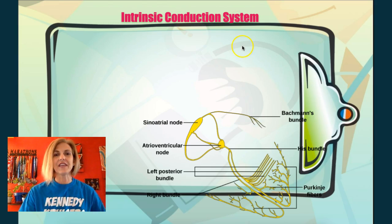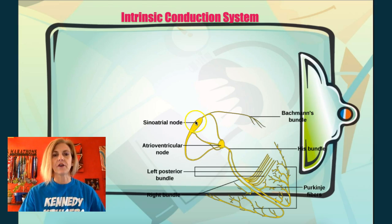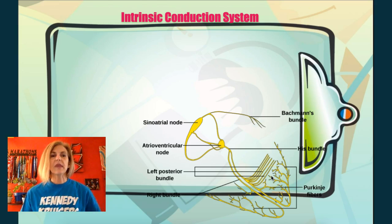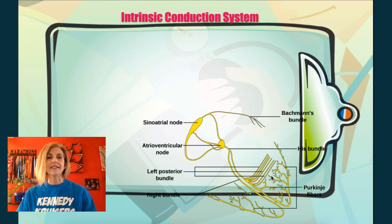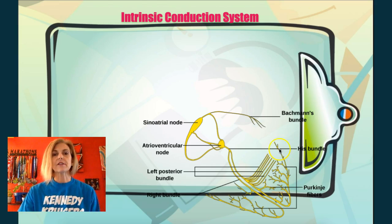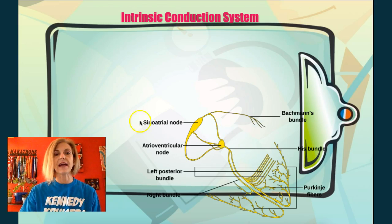Here are the bare bones of the intrinsic nodal system. You'll see the components: the sinoatrial node, the atrioventricular node, the bundle of His, the bundle branches (left and right), and then the Purkinje fibers. You should be able to label a diagram of these structures and identify the sequence that an impulse would travel as it moves through this nodal system.